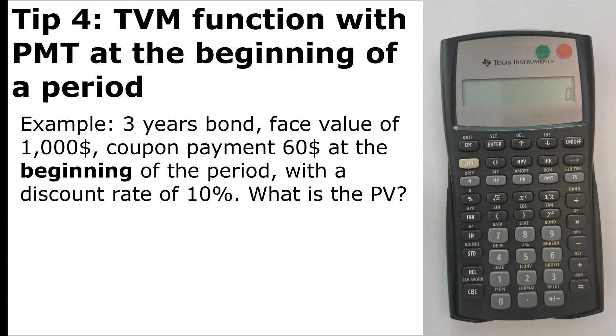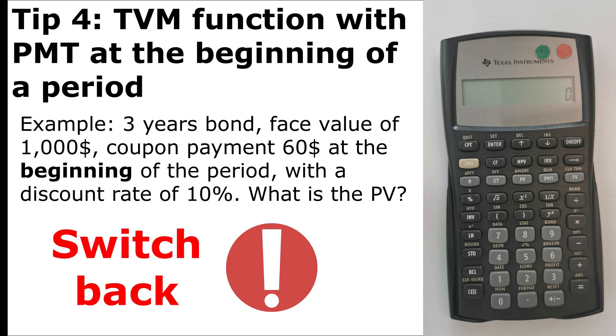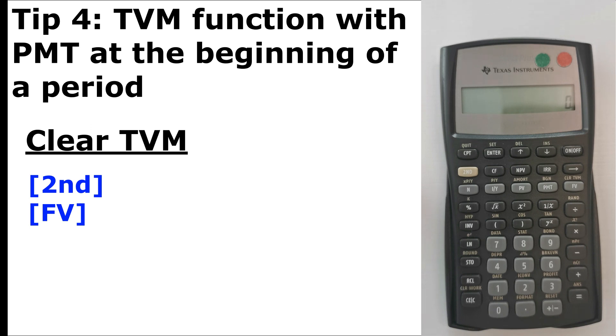So in the exam, if you get a question with payment occurring at the beginning of the period, switch the calculator to beginning mode. However, when you finish the question, directly switch back the calculator to end mode, because further questions' payment will be as ordinary annuity. Also, make sure to clear out the numbers that we inputted in the calculator. The calculator memorized the numbers that we had. So if we recall, we press RCL, future value. As you can see, it's still 1000. Recall payment, it's still 60. So make sure to clear it out. We press second, and future value. It's cleared out, everything is zero. Recall future value, now it's zero. Recall payment, zero. Everything is back to zero.